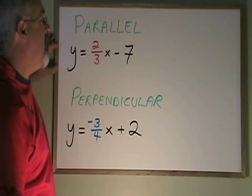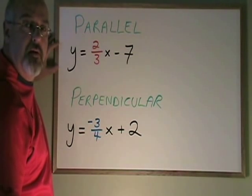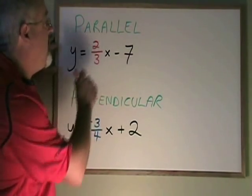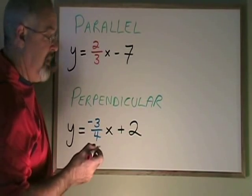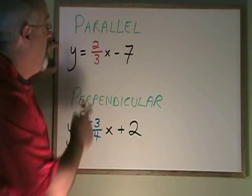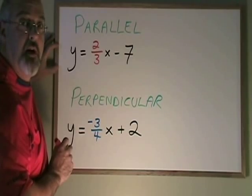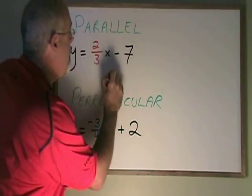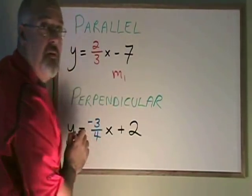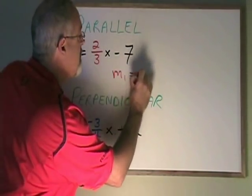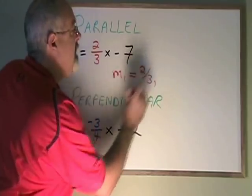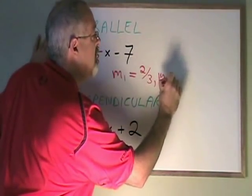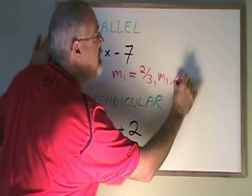If we want to find the slope of another line that is parallel to this one, it will have the same slope as this one. So using the y equals mx plus b form of the straight line equation, I can see that the slope of the given line is 2 thirds. I write m1, slope of line 1, is equal to 2 thirds. Then I state that slope 1 is parallel to slope 2.